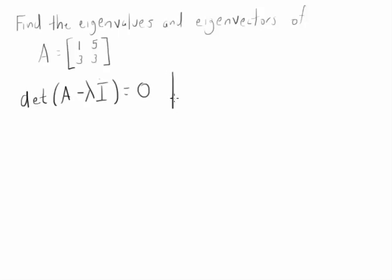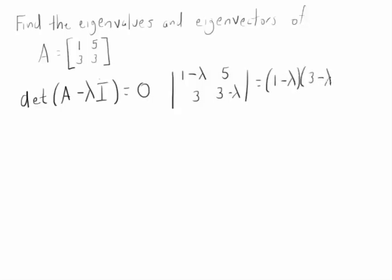We're writing this in matrix form. I'm using the straight lines to indicate we're just taking a determinant of a 1 minus lambda, 5, 3, 3 minus lambda, which will be 1 minus lambda times 3 minus lambda minus 15.